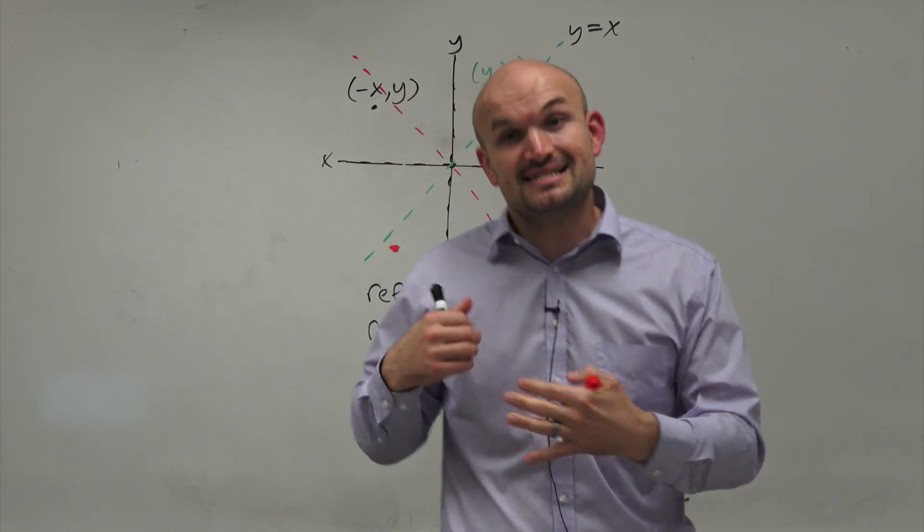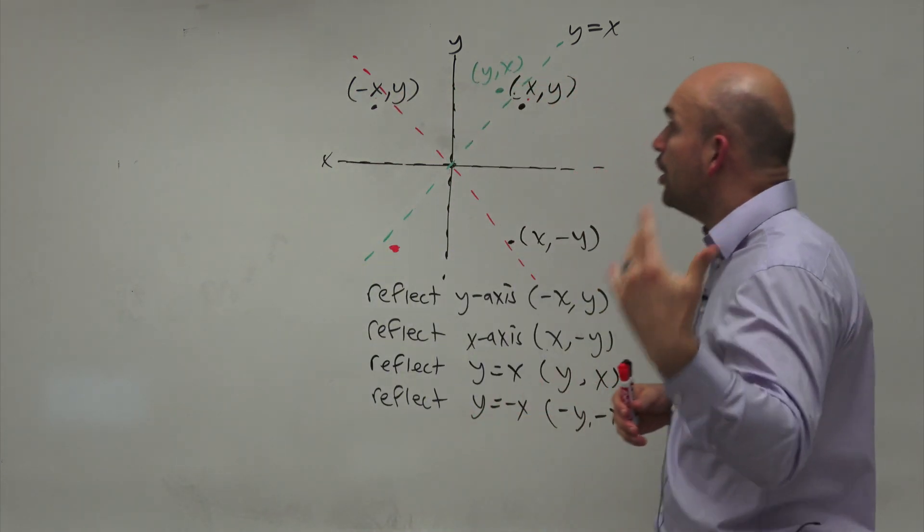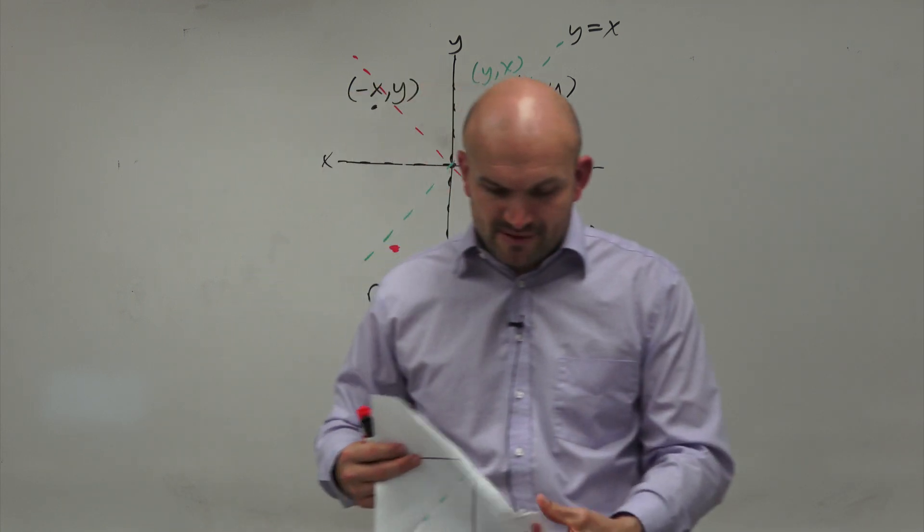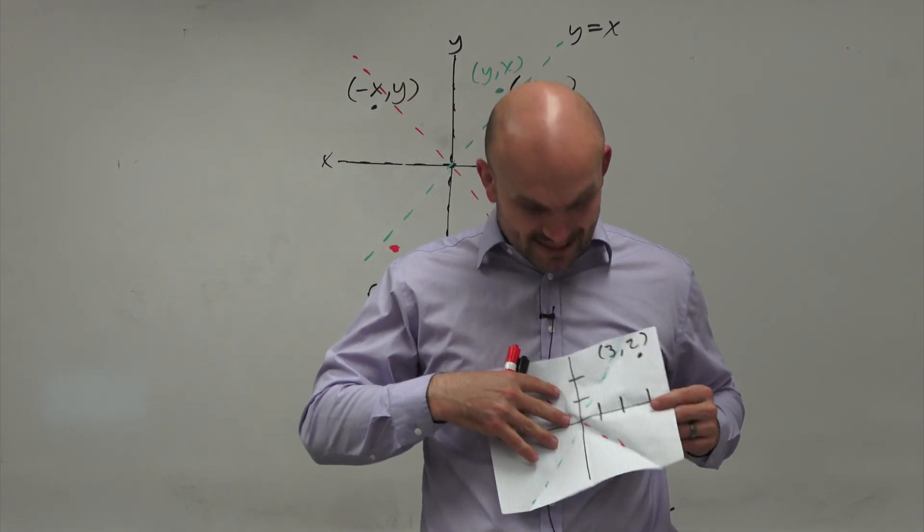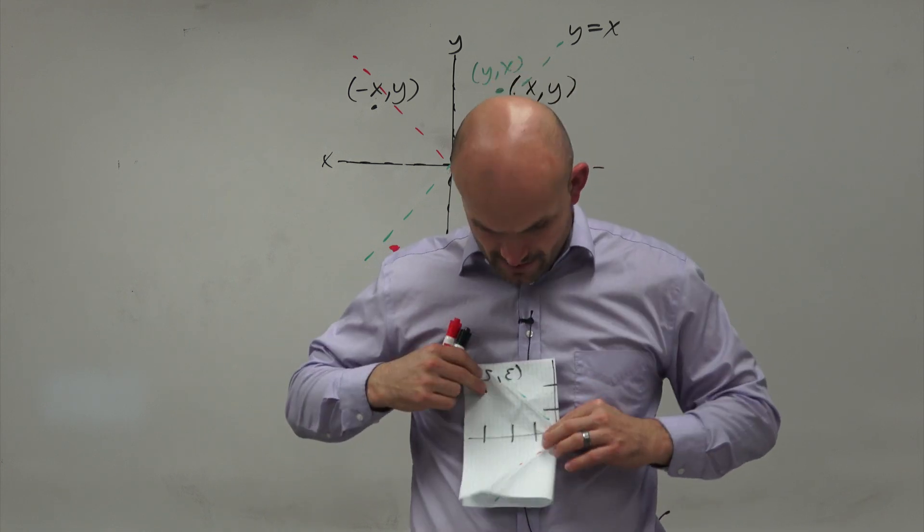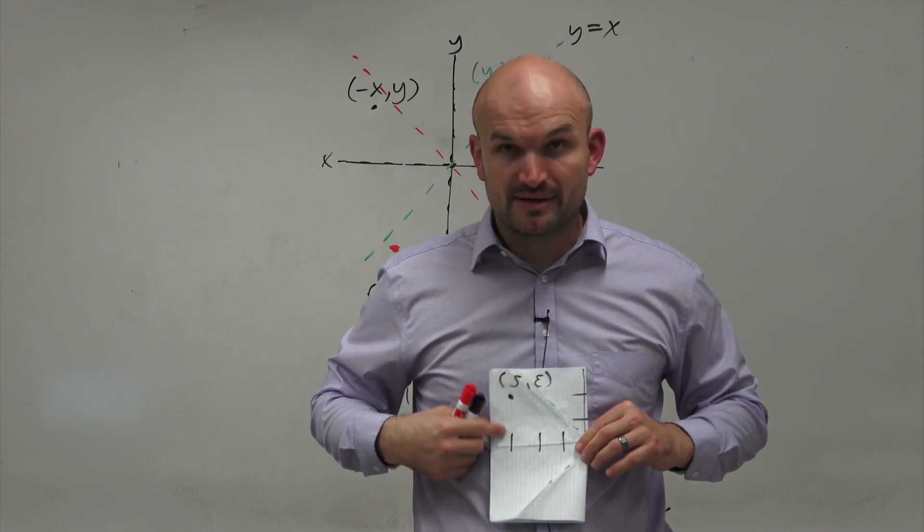And the last symmetry that we want to talk about is the origin. And so if you're symmetrical about the origin, that's basically being symmetrical about the X and the Y axis. So that's basically taking my graph, reflecting it about the Y axis.